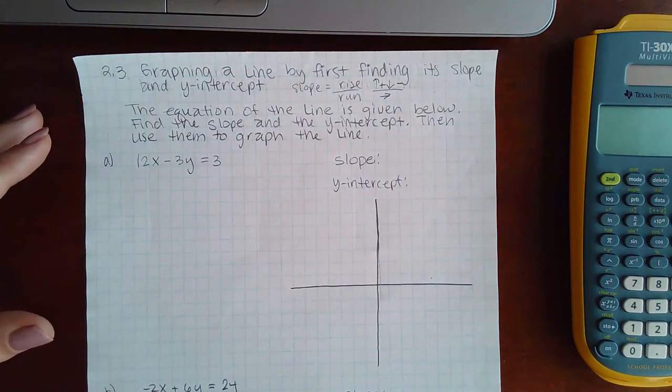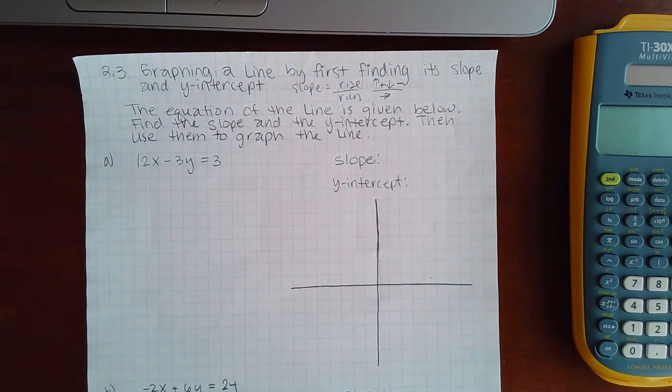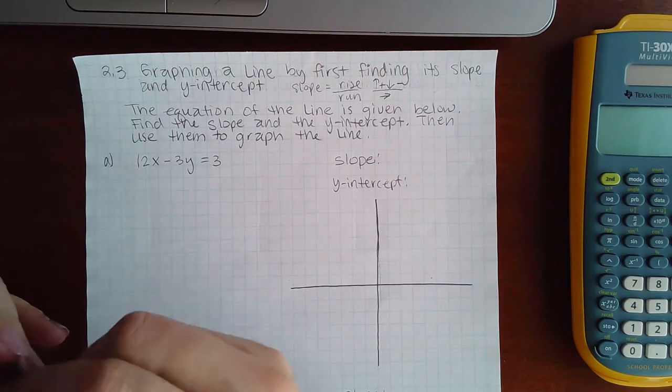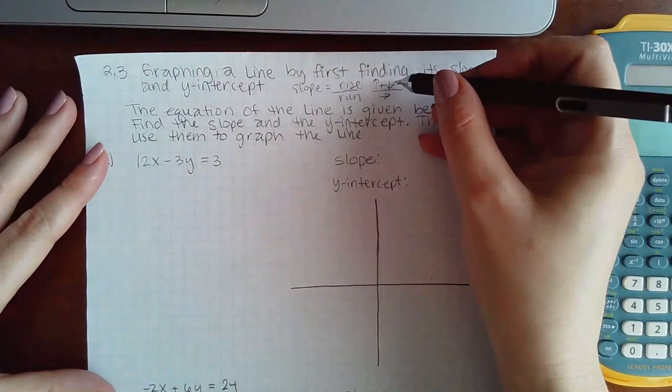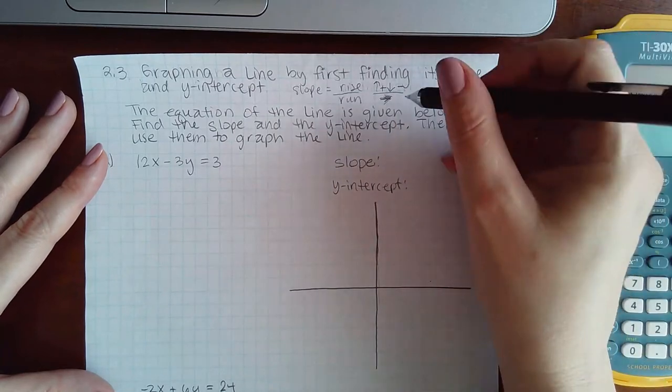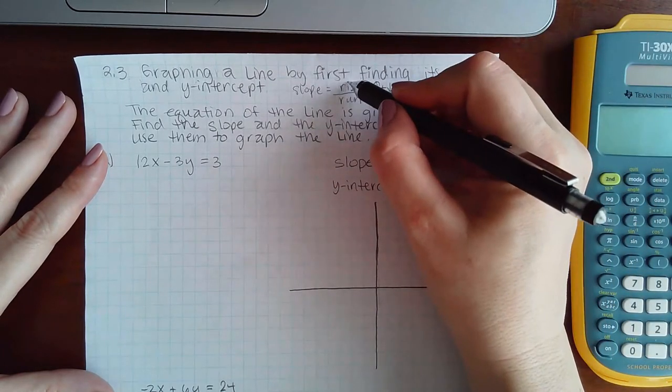You could go backwards, but then it creates the opposite rise, so it gets a little confusing. I just teach to run forward and you should be able to get the line. Depending on the sign, it's only going to tell you whether to go up or down, but always run forward.